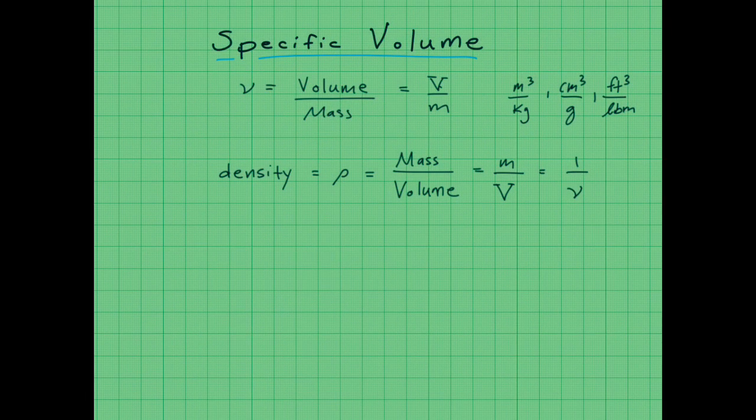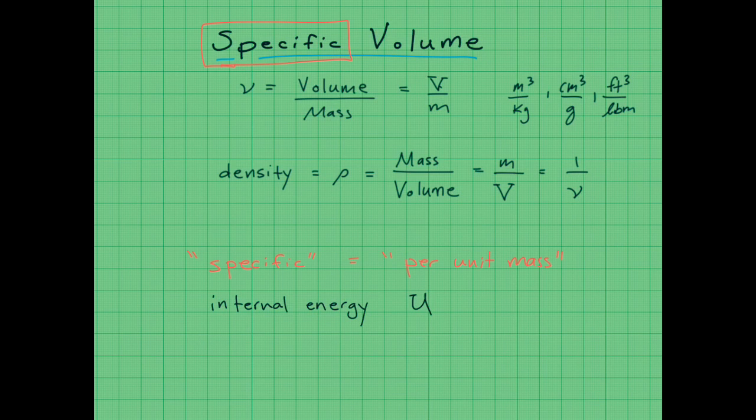So in thermodynamics, something else to keep in mind is that this term, specific, is sometimes used to mean per unit mass. So anytime you have a property that's divided by mass, it's called specific. So if you have internal energy, it would be represented by capital letter U in many textbooks. And if you throw specific in front of that description, that gives you lowercase letter u. And so instead of units of kilojoules, now I have units of kilojoules per kilogram. So it kind of generalizes the problem because it's on a per unit mass basis. It's not tied to the particular mass of a problem.